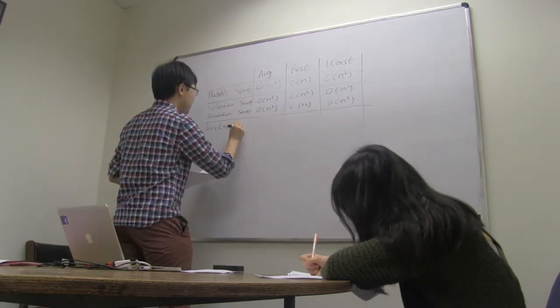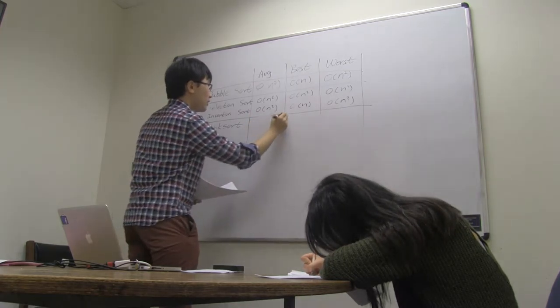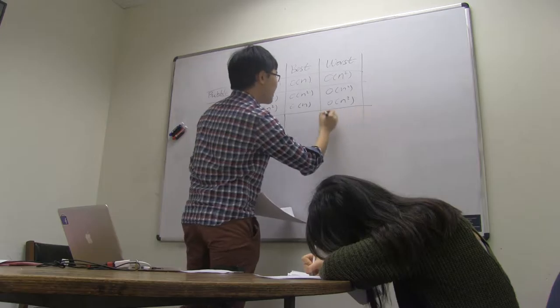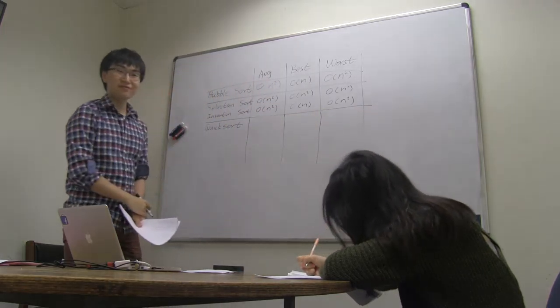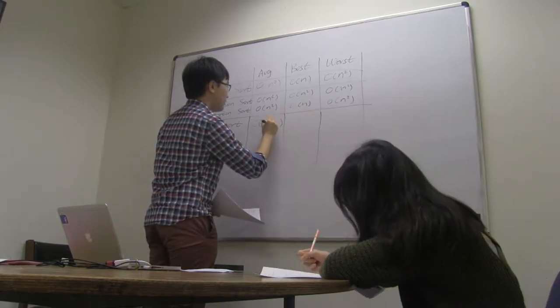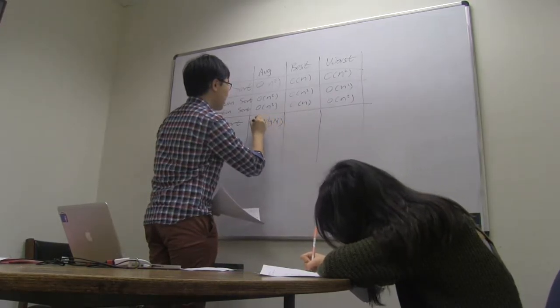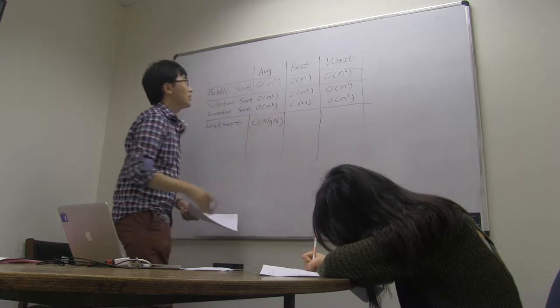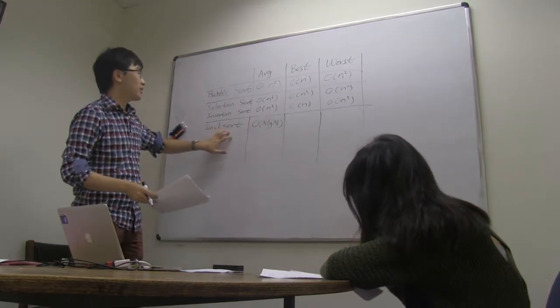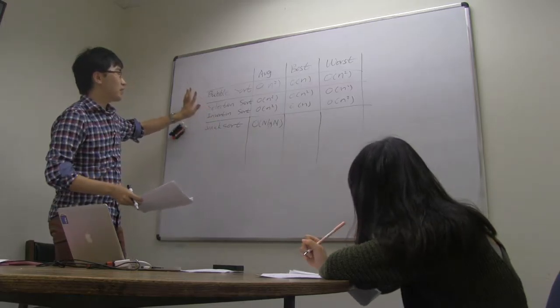Quicksort. So can anyone tell me what's the average time complexity for quicksort? Order n log n. Right, n log n. Very good. So we see that the average or the amortized complexity for quicksort is better than bubble-sort, selection-sort, and insertion-sort.